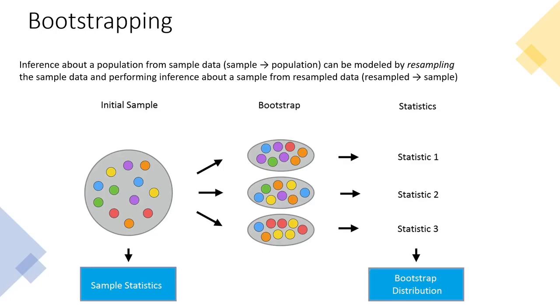Bootstrapping looks fancy but the idea is pretty simple. The inference about a population from sample data can be modeled by resampling the sample data and performing inference about a sample from the resampled data. For example, if we have a dataset and calculate some sample statistics — say the number of greens or the average color — the idea behind bootstrap is to create new datasets or new samples from this initial sample.